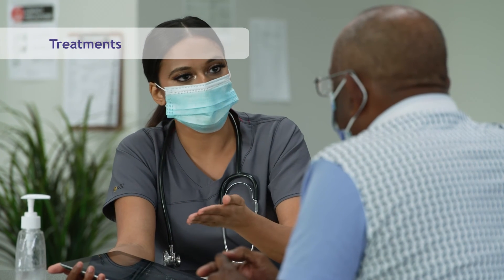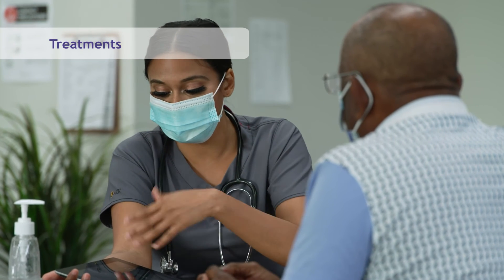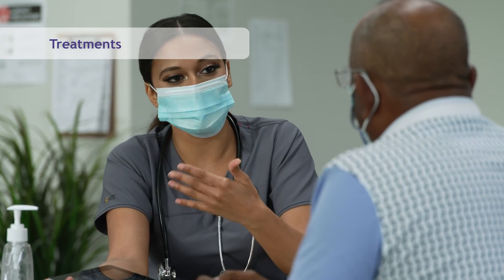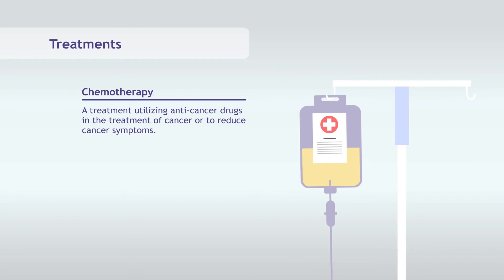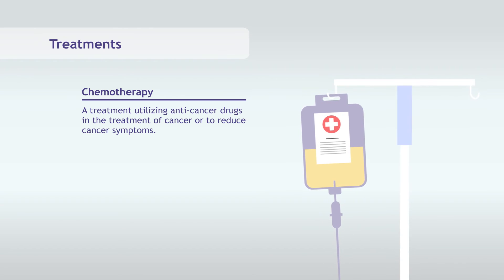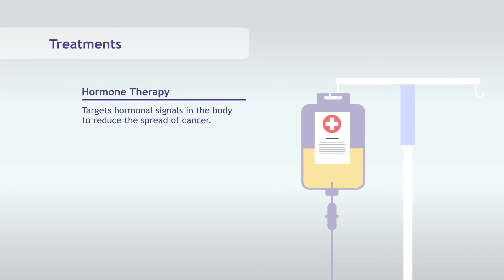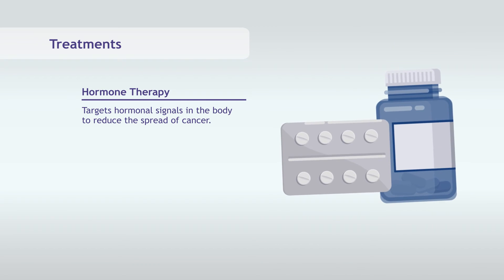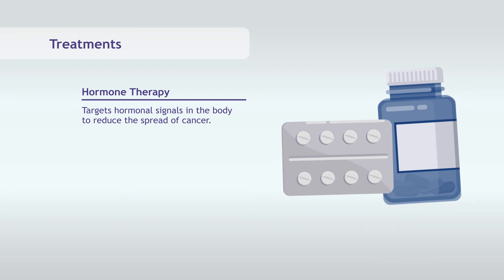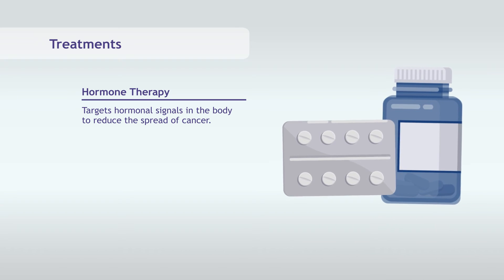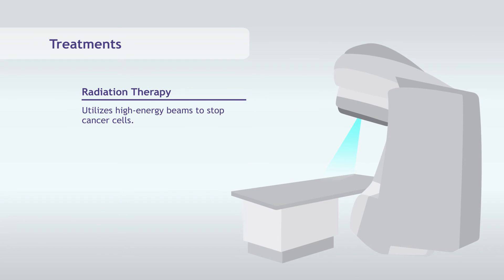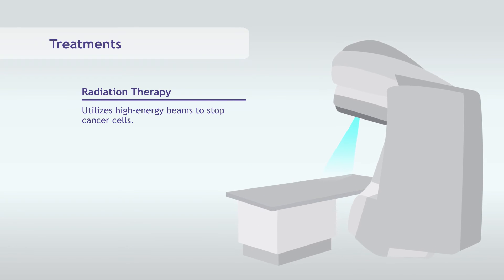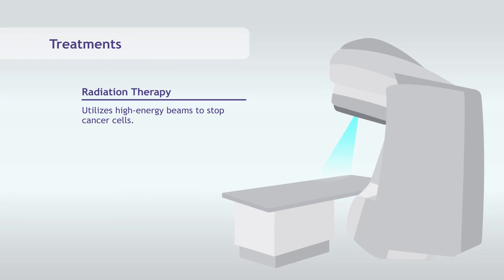Your doctor may suggest a variety of treatments depending on your diagnosis. These treatments may include chemotherapy, which utilizes anti-cancer drugs in the treatment of cancer or to reduce its symptoms. Hormone therapy blocks or changes the normal hormonal signals in the body to reduce or stop the spread of cancer. Radiation therapy utilizes high energy beams to stop cancer cells.